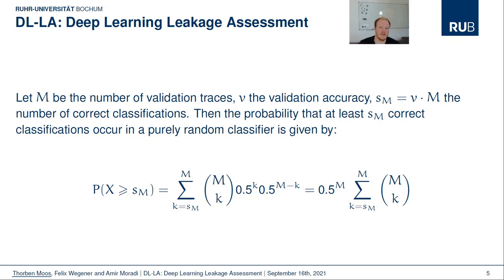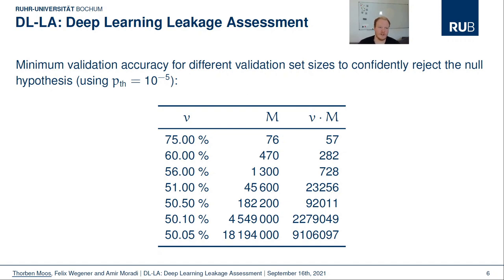Here is a formula to calculate the probability that SM correct classifications are achieved by a randomly guessing binary classifier, where M is the cardinality of the validation set and V is the validation accuracy. To get an intuition for the required validation accuracy to confidently reject the null hypothesis for different sizes of the validation set, we have listed a few examples. For a set of only 76 traces, at least 57 of them need to be classified correctly, which corresponds to a 75% validation accuracy. For a set of 45,600 validation traces, the validation accuracy of 51% is already sufficient to reject the null hypothesis. It becomes clear that DLLA does not require the trained classifiers to be very good at classifying a single trace; it is only important that it classifies the traces better than a random guess over a large number of traces.